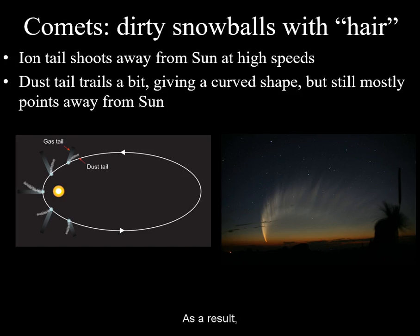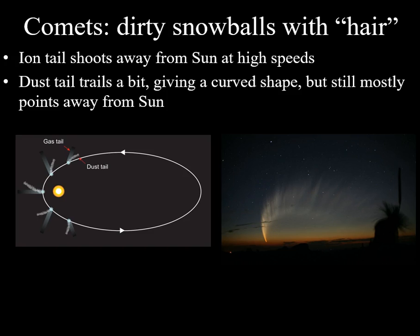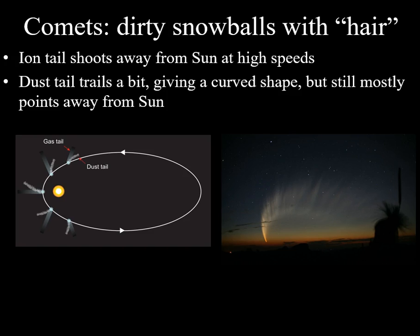As a result, the ion tail always points directly away from the sun, while the dust tail also points away but lags slightly behind. The comet can be moving in the direction of its tail.